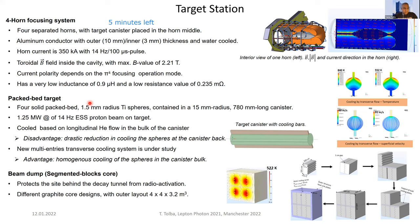Several target designs have been studied, but a pebble-bed structure has been chosen as the baseline design. For this experiment, we use four solid pebble-bed targets for each of the horns, each containing 1.5 mm radius pellets in a 15 mm radius, 780 mm long canister. Each target system must withstand a 1.25 megawatt beam at 14 Hz repetition rate. The default cooling system depends on longitudinal helium flow in the bulk of the canister, though simulations show a disadvantage: a drastic reduction in cooling of the spheres at the canister back.